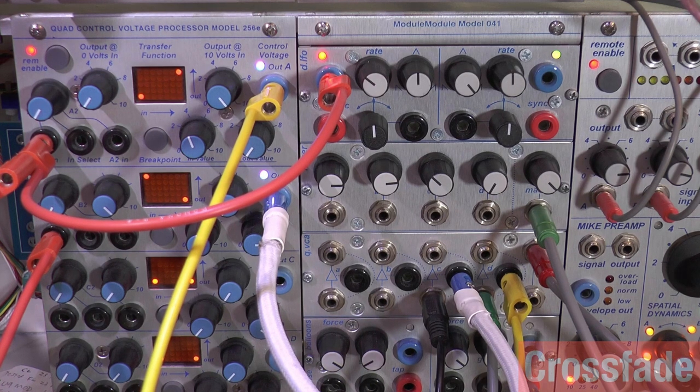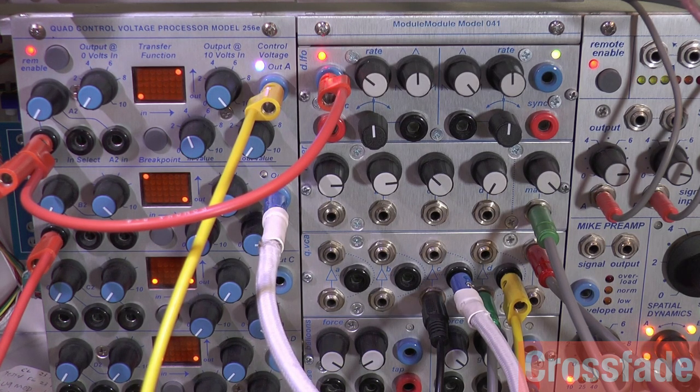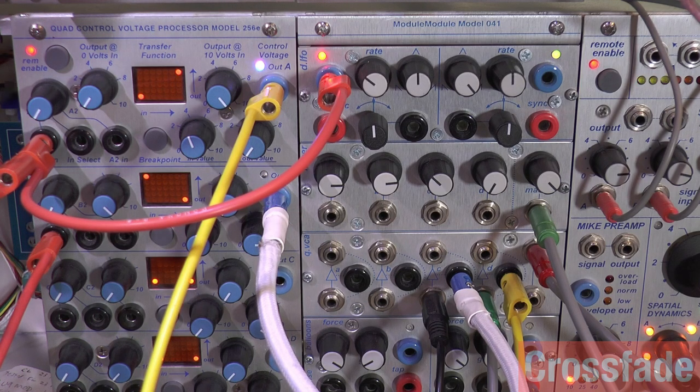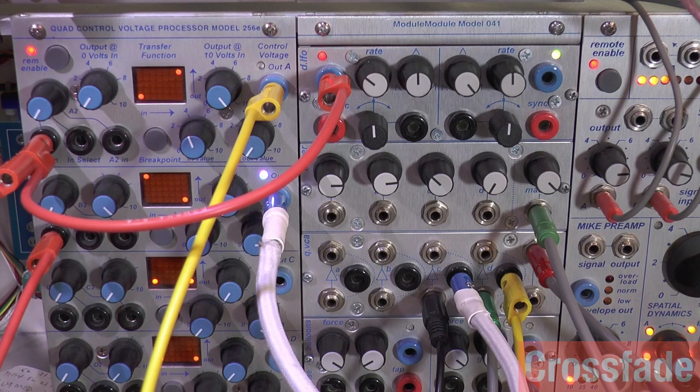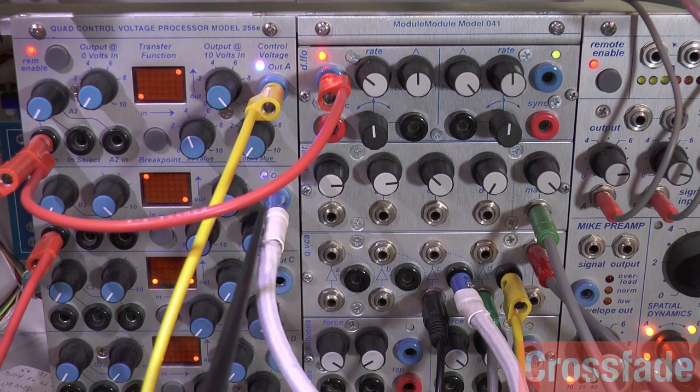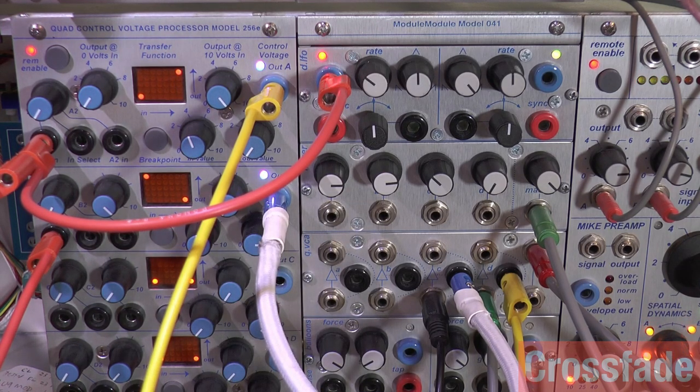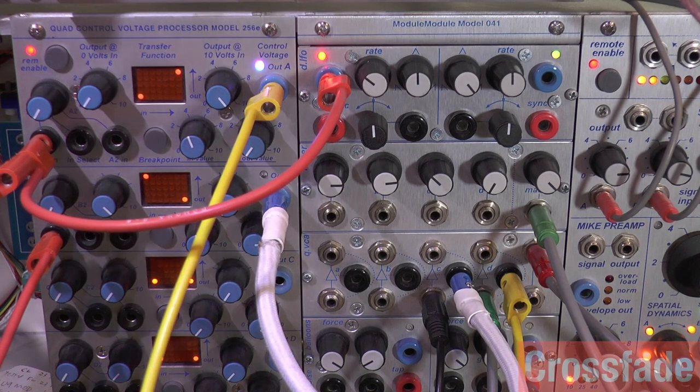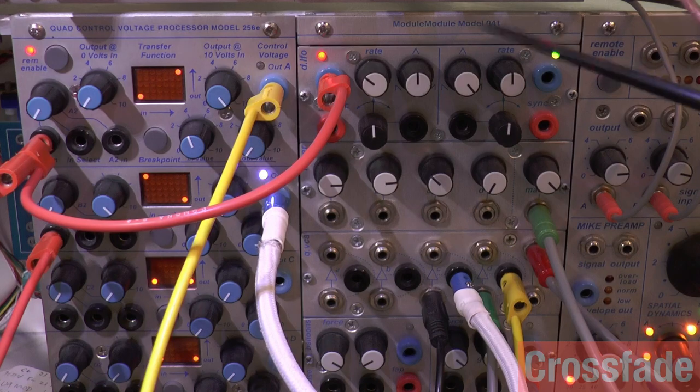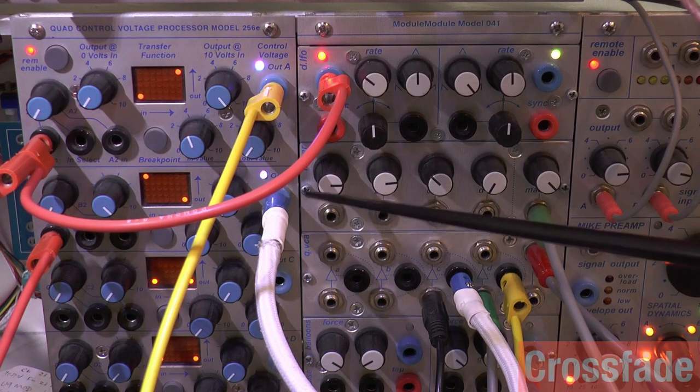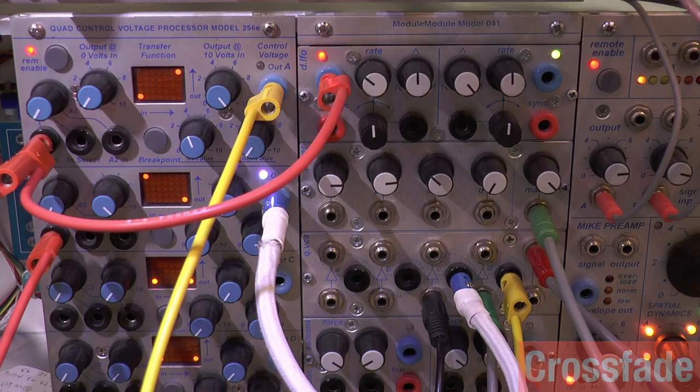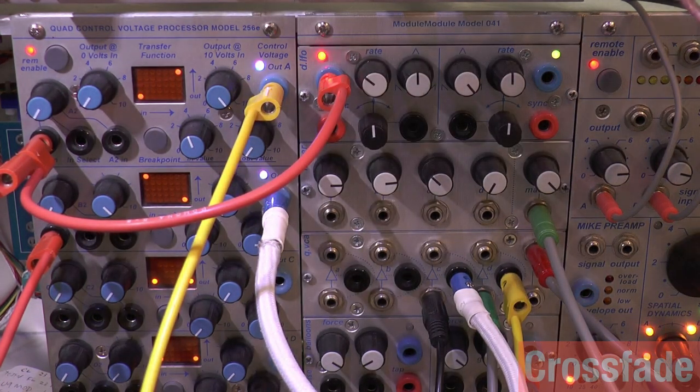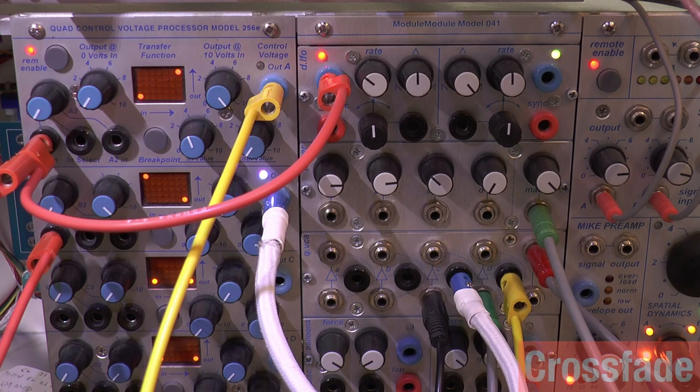And then I have a Morphing Terrarium here. Same LFO just being inverted, and now you're hearing the difference. So this is the CV control voltage out to the VCA. Pretty self-explanatory - as this rises, it's dropping this one down and raising this one up. Crossfading.